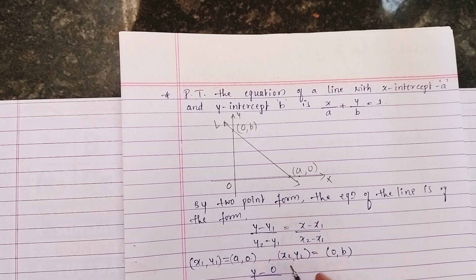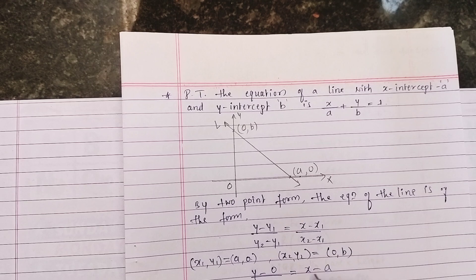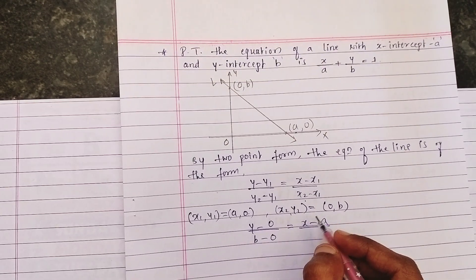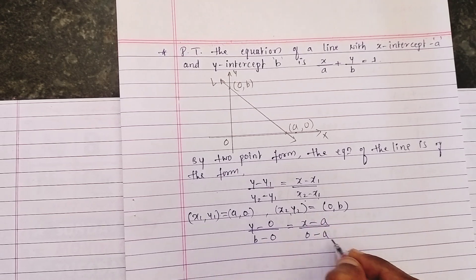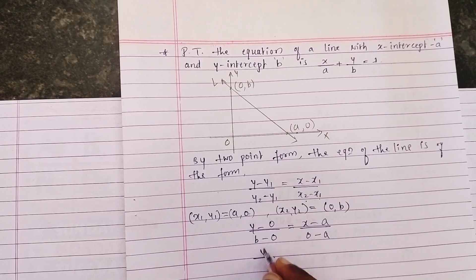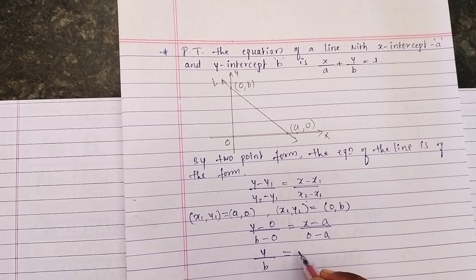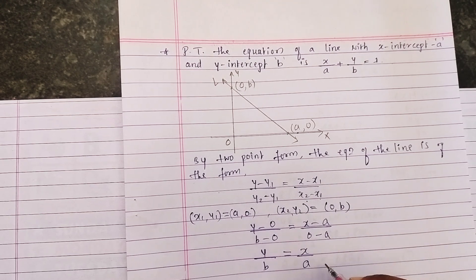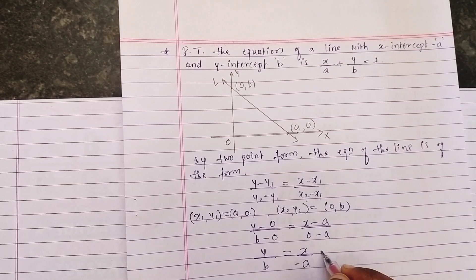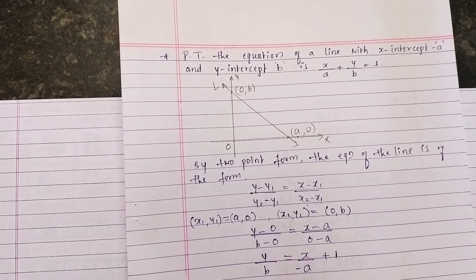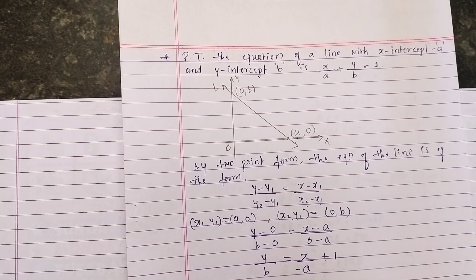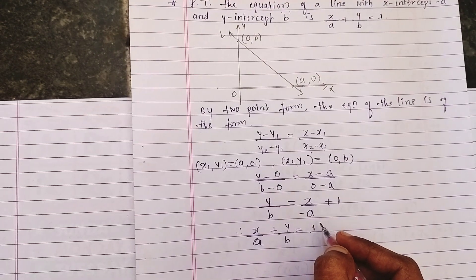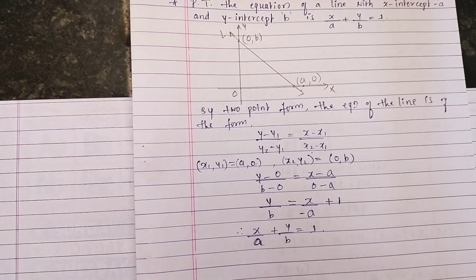This simplifies to y/b = (x - a) / (-a). Expanding: y/b = x/(-a) + a/(-a). The term a/(-a) cancels to give -1, so: y/b = -x/a + 1. Rearranging, we get x/a + y/b = 1. Hence the proof of the intercept form equation is complete.